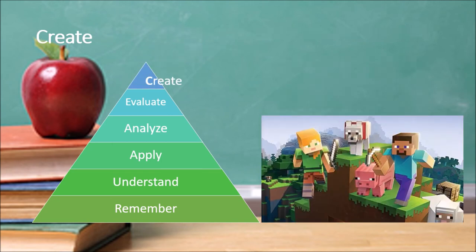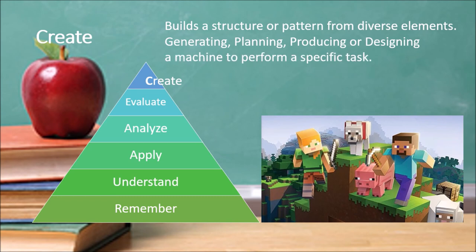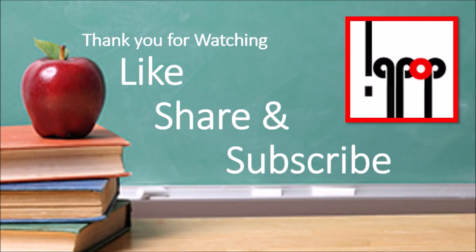The final level is 'create.' Once we are able to evaluate and identify the best process or method, we must be able to build new structures — creating patterns, generating, planning, producing, and designing a machine to perform a specific task. This concludes Bloom's Taxonomy in the cognitive domain of learning. Thank you for watching — like, share, and subscribe to my channel.